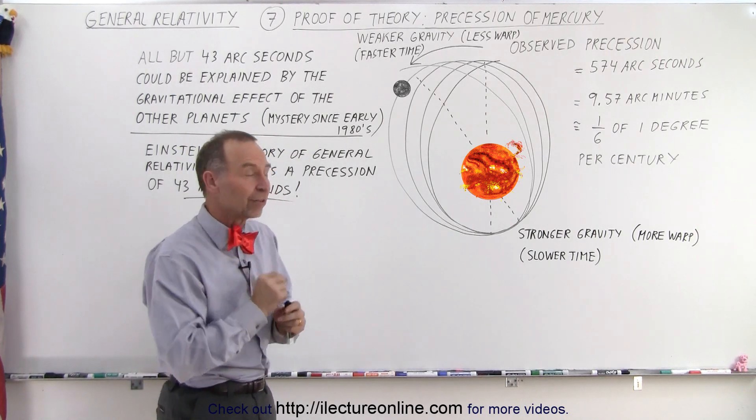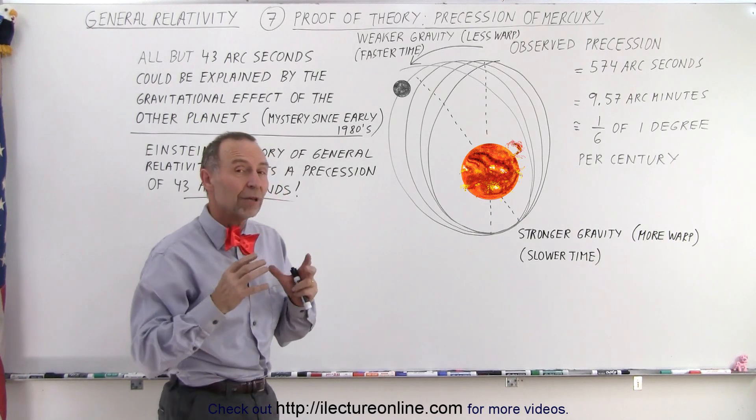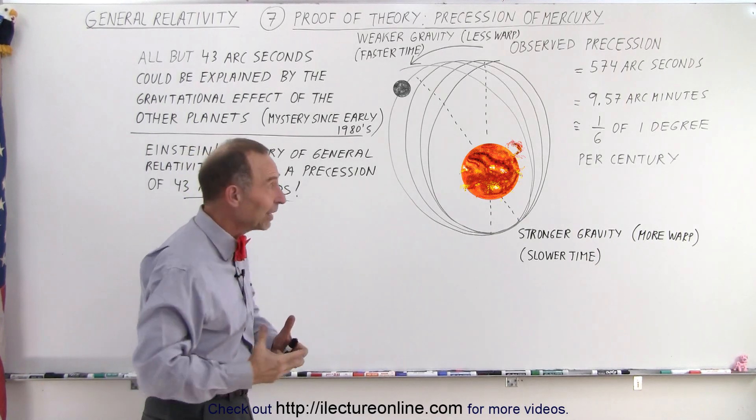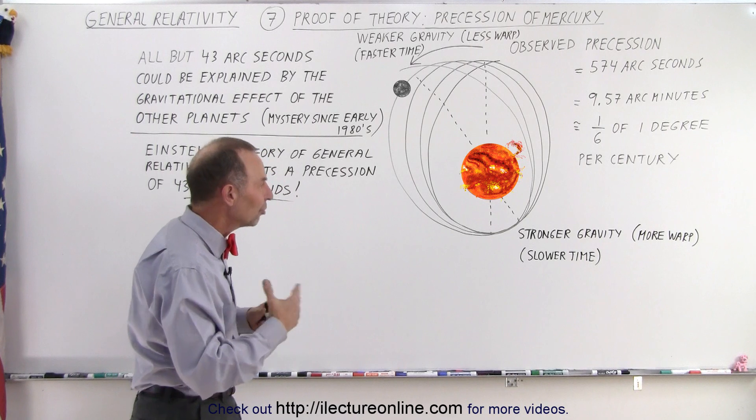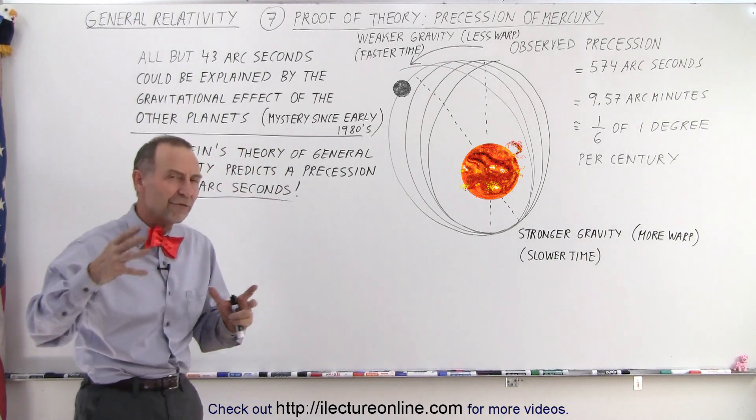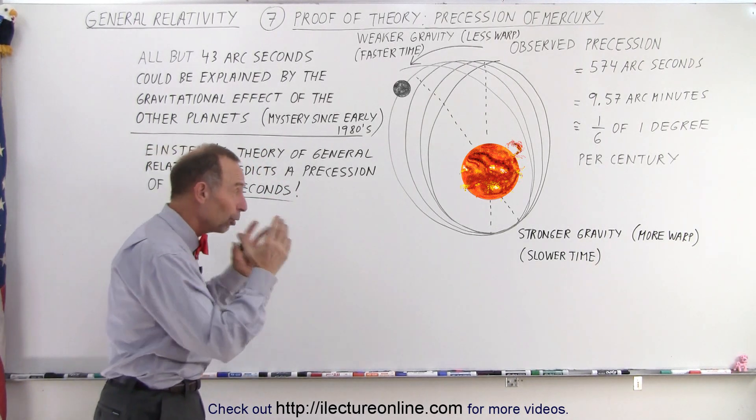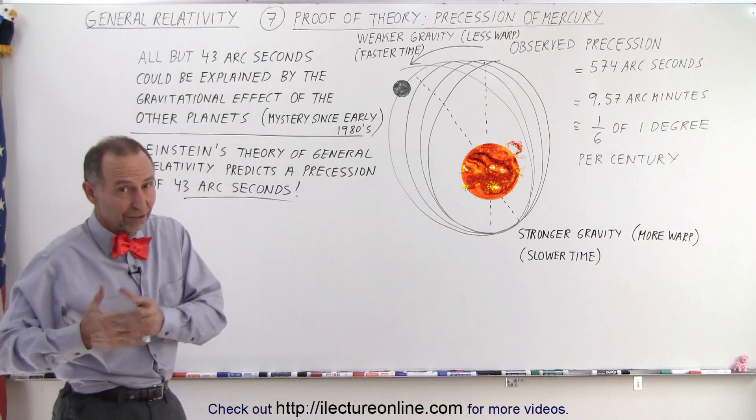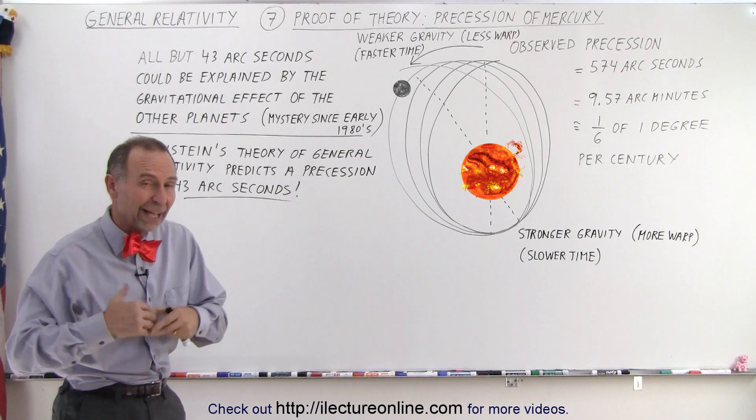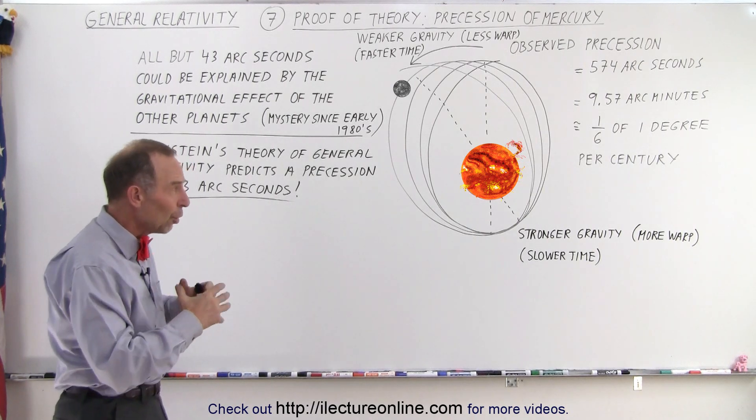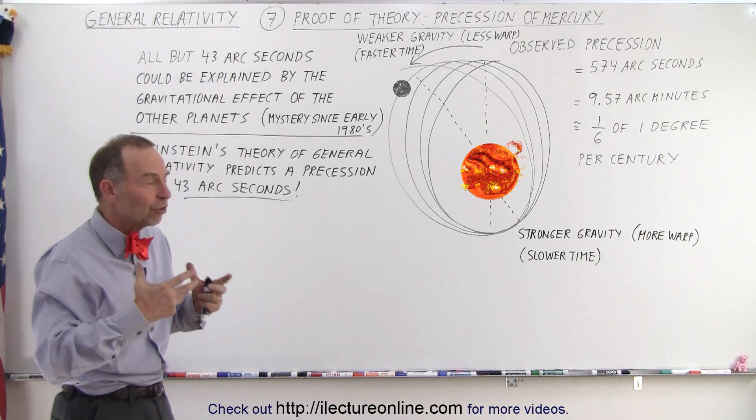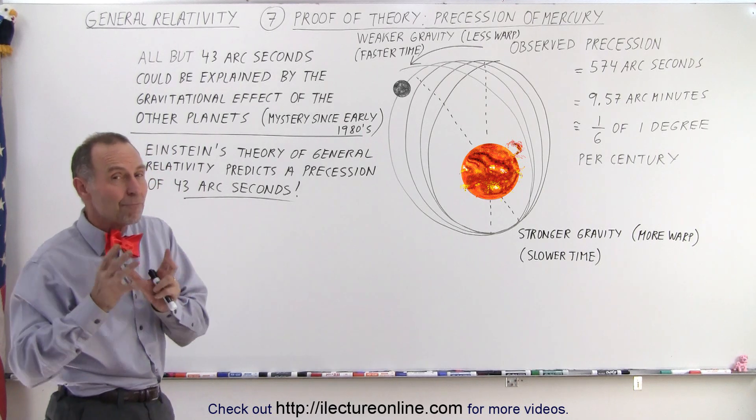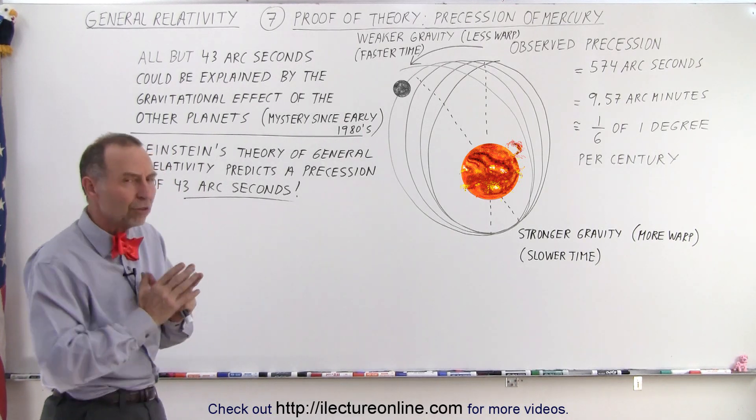But there's an additional factor at play: the general theory of relativity. When they calculated the effect of all the other planets on Mercury's orbit without taking into account general relativity—because it was not yet known in the early 1800s—when they calculated the shift and then measured it, there was a discrepancy.